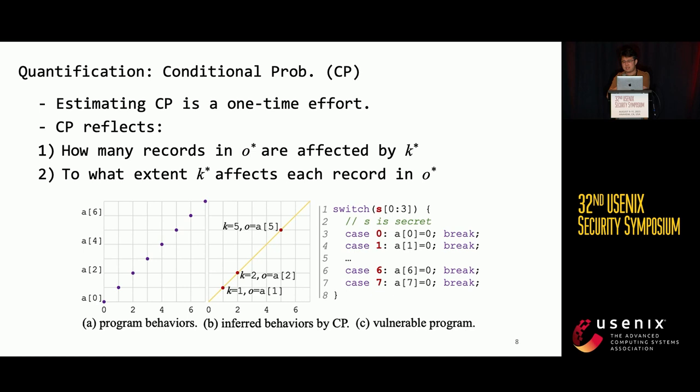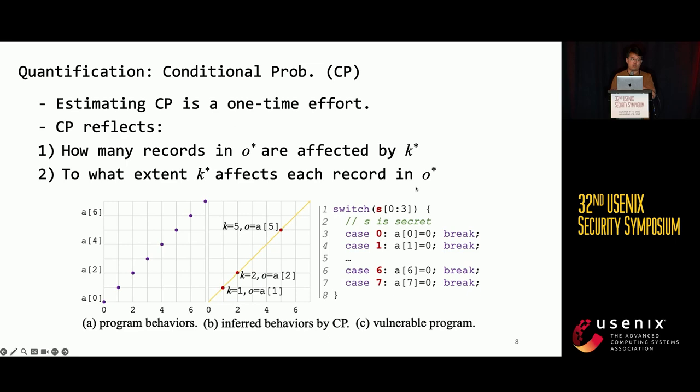Computing conditional probability can save cost because it is a one-time effort. In general, the conditional probability reflects how many records in O* are affected by K* and to what extent K* affects each record in O*. This can principally alleviate estimation error and the coverage issue. For example, if I want to quantify the leakage with sampling, I need to cover all eight cases, but by using conditional probability, I can infer that wherever the secret S increases by one, the array index also increases by one, without needing to cover all eight cases.